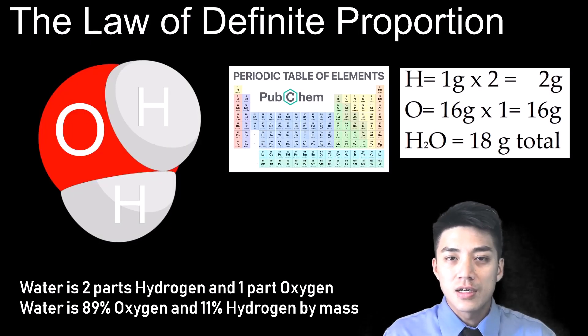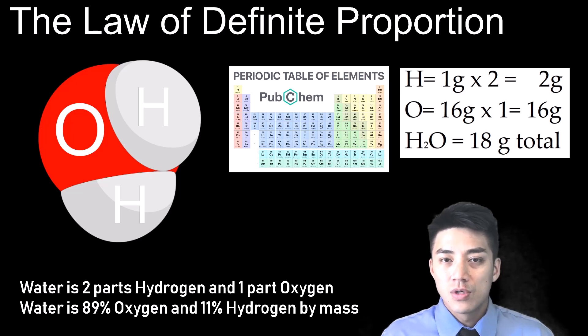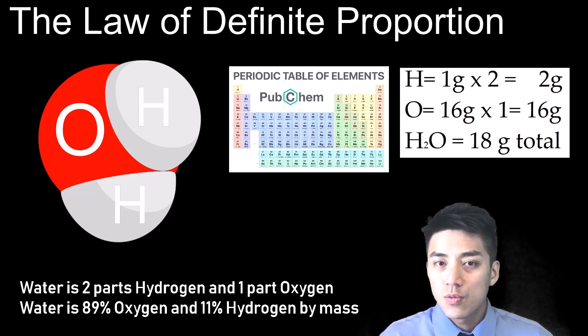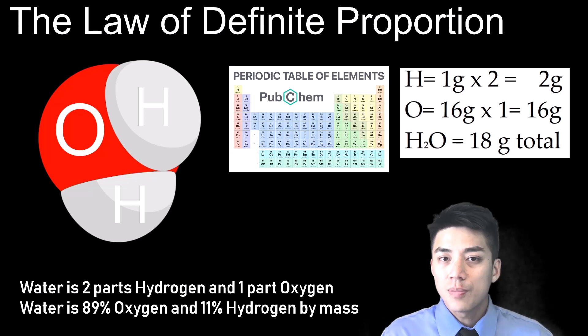We'll switch gears now, and we'll talk about the law of definite proportions, which basically states that all compounds and substances are made of atoms and elements in the same ratios, and they all have the same percent by mass. For example, if you take water, the formula for water is always H2O. It's always two parts hydrogen and one part oxygen.